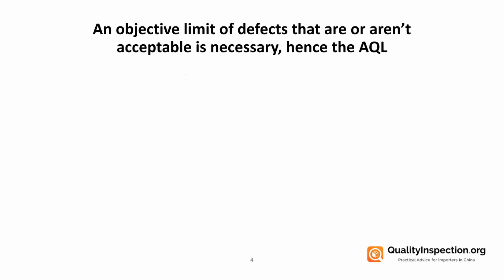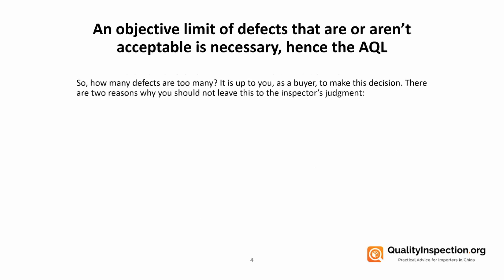The AQL is an objective limit of defects that are or are not acceptable. Instead of guessing, we've got to draw a line in the sand as to how many defects are too many. This is something that you as the buyer need to decide, and there are two reasons why you shouldn't leave it up to a quality inspector alone.